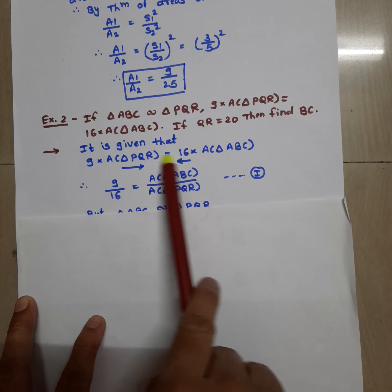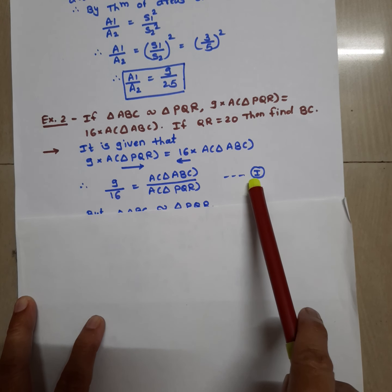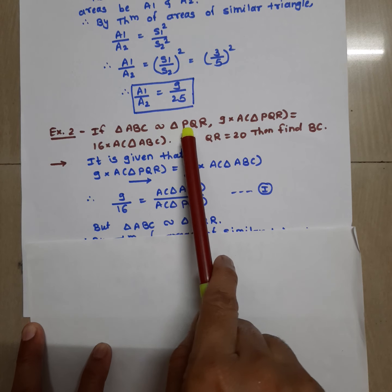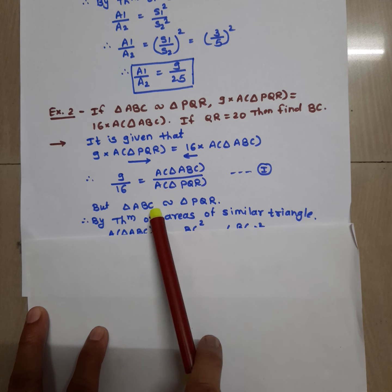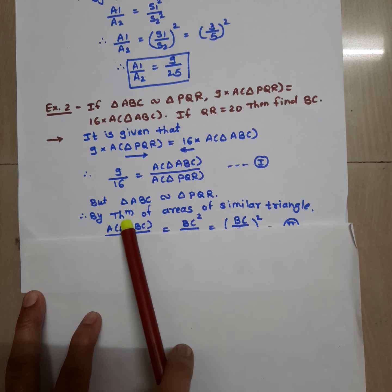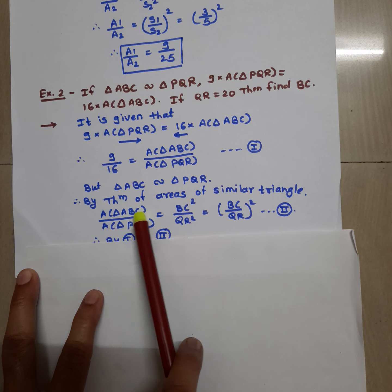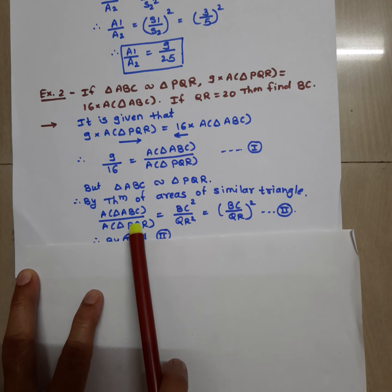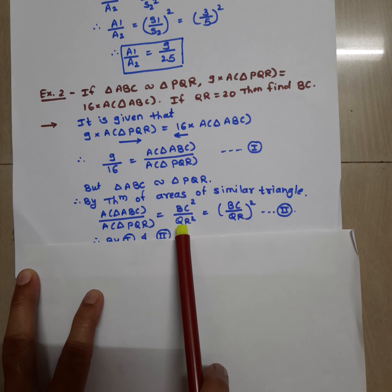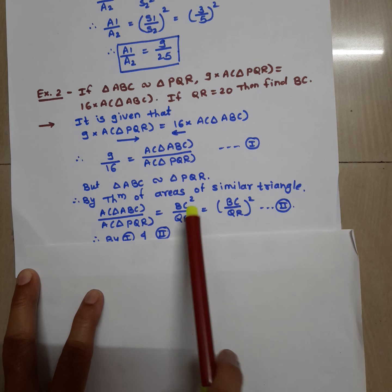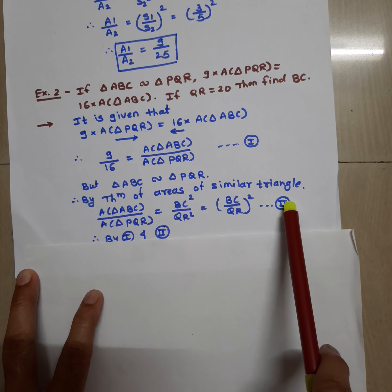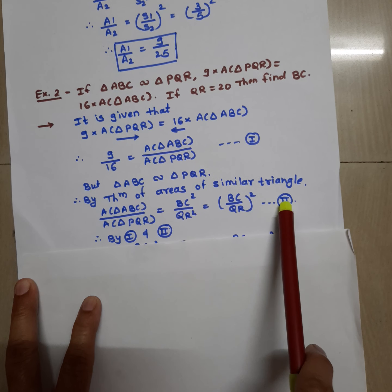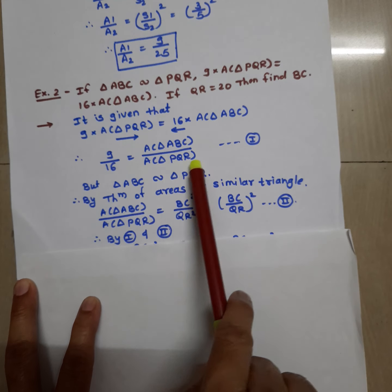Now we have the ratio of the areas of two similar triangles. Since these triangles are similar, by the theorem of areas of similar triangles, area of triangle ABC upon area of triangle PQR is equal to BC square upon QR square — we choose BC because the question asks for BC. Write this as (BC upon QR) squared. Call this equation number 2.